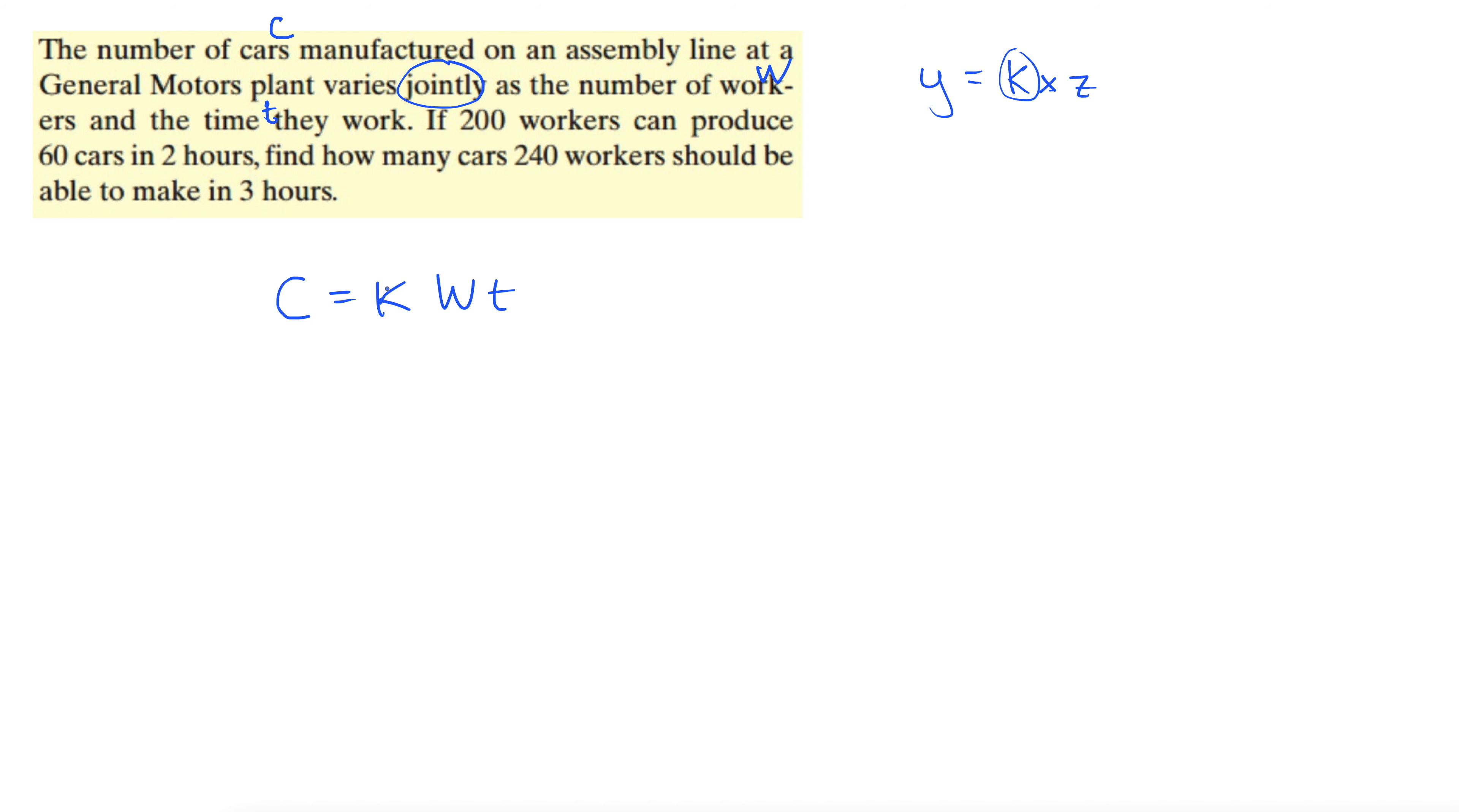The number of cars varies jointly with the number of workers and the amount of time that they work. Next thing we do is use the data given to solve for k. These are all the same. Next, they'll give us some values. We're still trying to solve for k. It tells us there's 200 workers and they produce 60 cars. 60 goes over here under cars in two hours. That's our time.